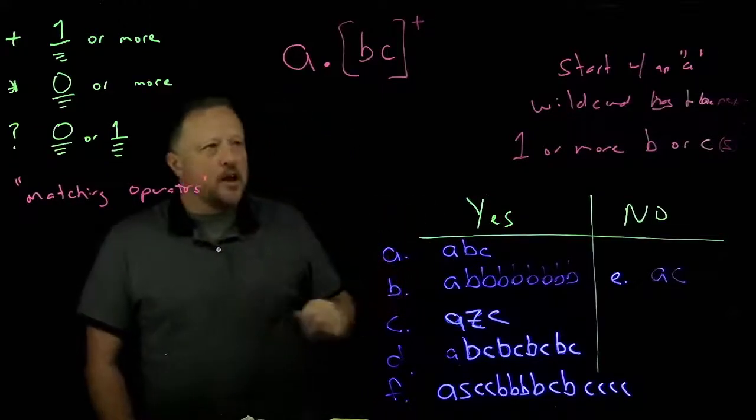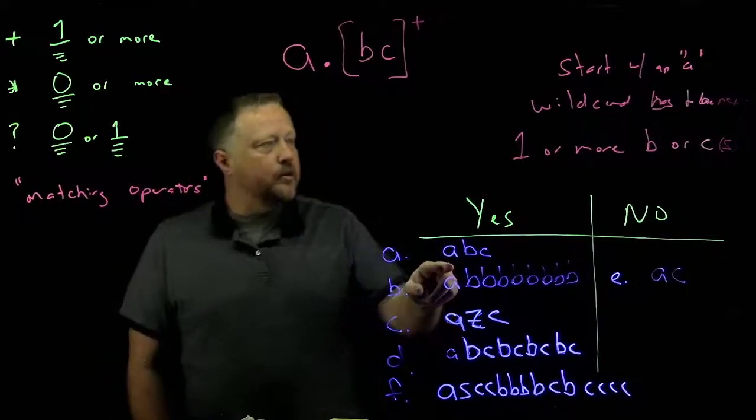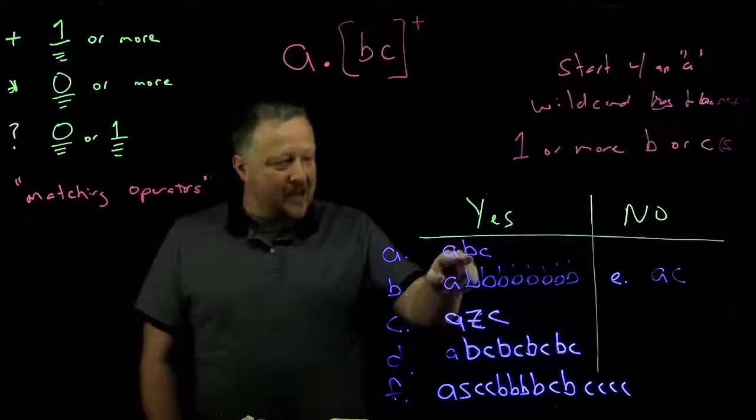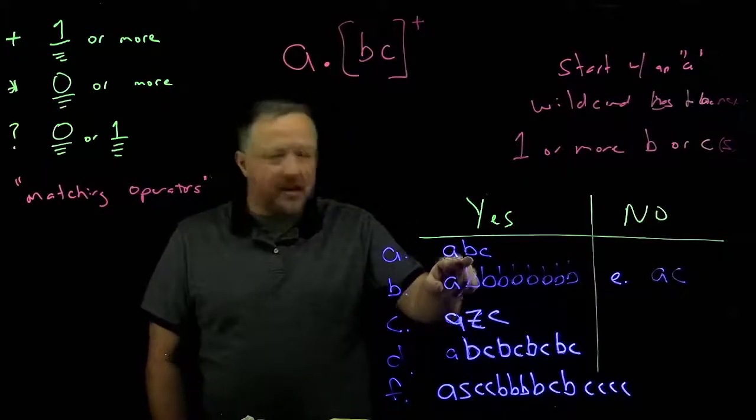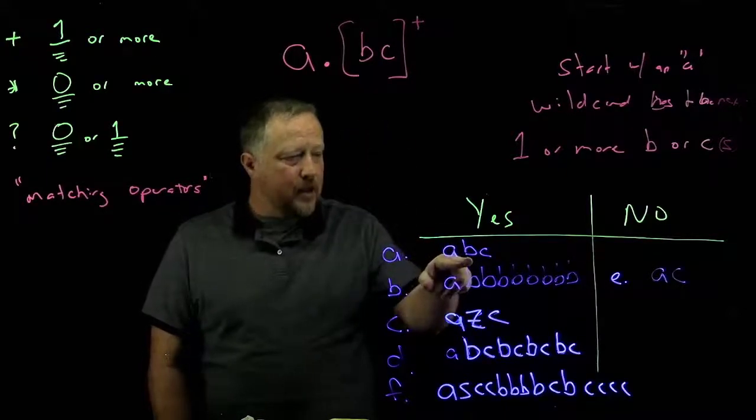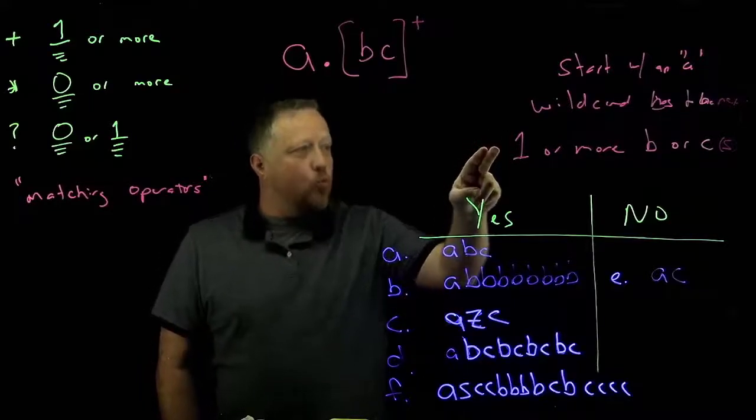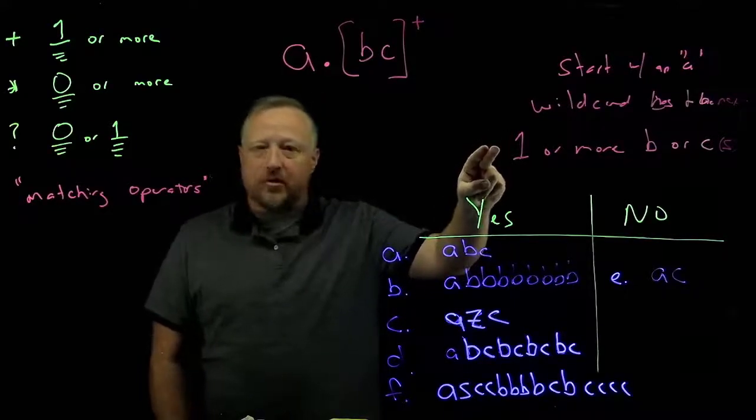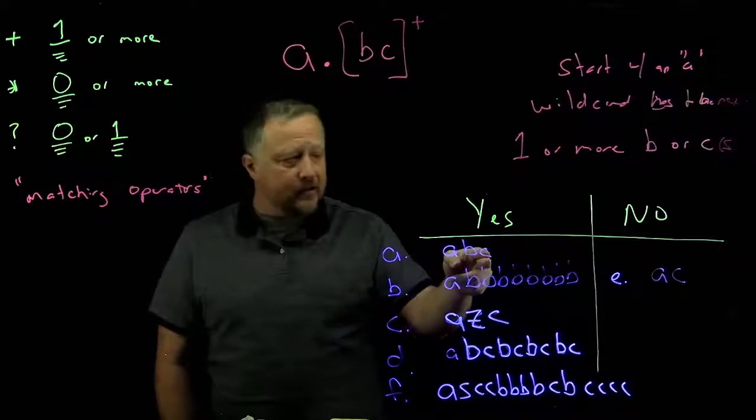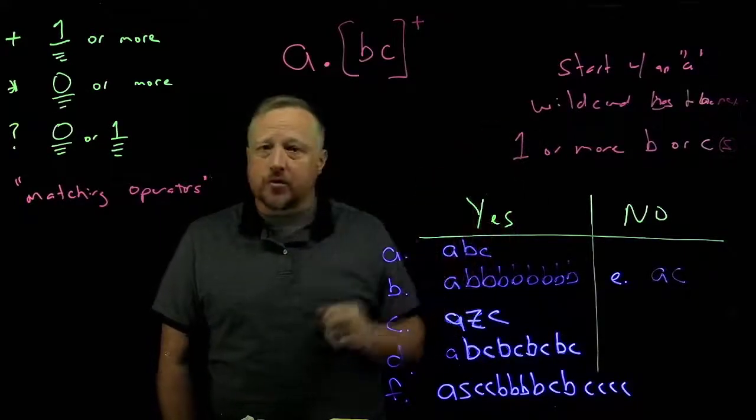Let's go to our yeses. So we have an A. Our next has to be a wild card. So that's B. It could be anything. Could have been whatever we wanted. And then after that, it has to be one or more Bs or Cs. So that takes care of that. So there's a C matching that last part. So we're good there.